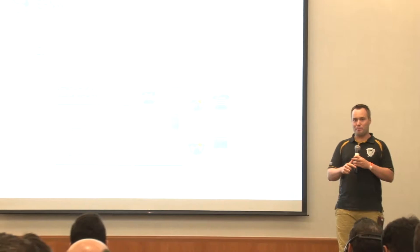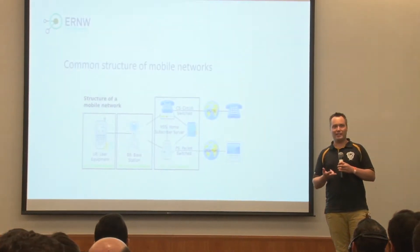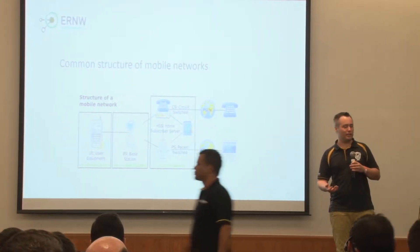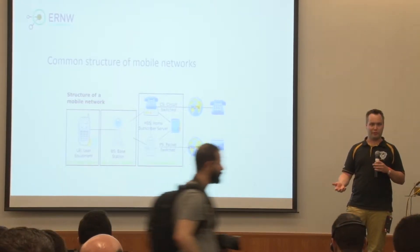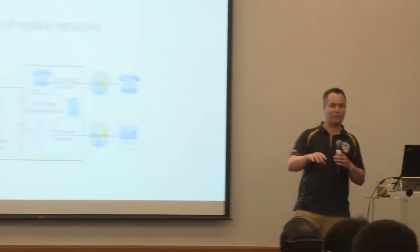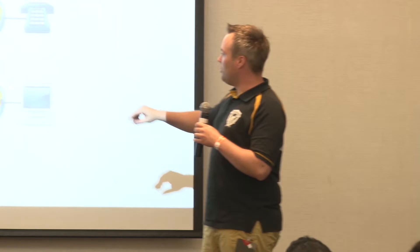The core network must have some management entities and a database. The database stores the authentication information, which you also have if you're buying a SIM card — on the SIM card there will be some authentication information, and the provider needs quite the same in his back end. In typical networks we just need that, and then of course we need some interconnections to the normal telephony network, to the Internet, whatever services we would like to have.